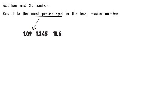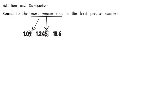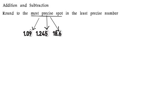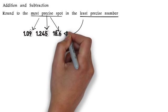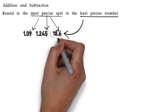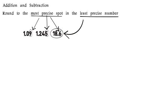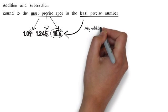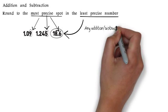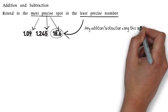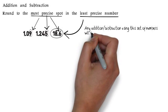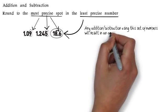The most precise spot is the digit farthest to the right that is significant. So the 9 in 1.09, the 5 in 1.245, and the 6 in 18.6 are the most precise spots in those numbers. The least precise number is the one whose most precise digit is farthest to the left. The 6 is in the tenths place, whereas the 5 was in the thousandths and the 9 was in the hundredths, so 18.6 is the least precise number.